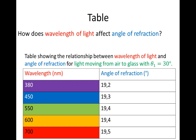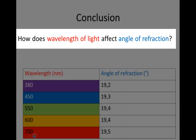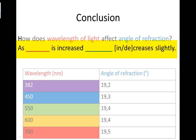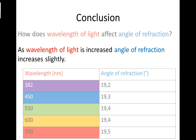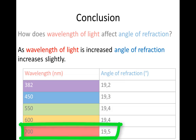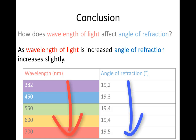We put all that in our table. Our conclusion must answer: how does wavelength of light affect angle of refraction? The change is very, very slight — if we were using a protractor rather than the inbuilt angle display, we wouldn't even have noticed it. As wavelength of light is increased, angle of refraction increases slightly. Our smallest wavelength, 382 nanometres, is associated with the smallest angle of refraction, 19.2 degrees, and our biggest wavelength, 700 nanometres, is associated with the biggest angle of refraction, 19.5 degrees.